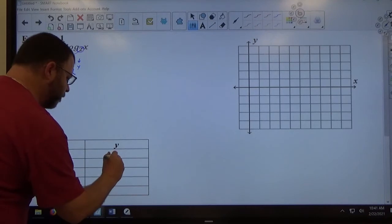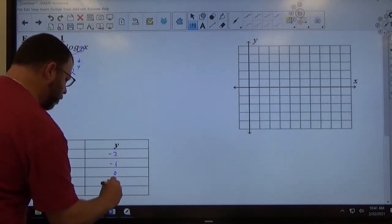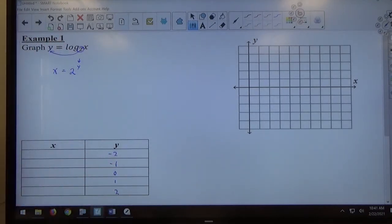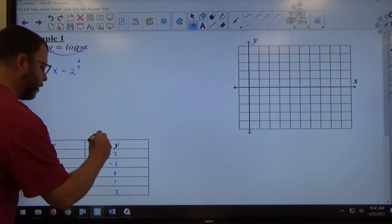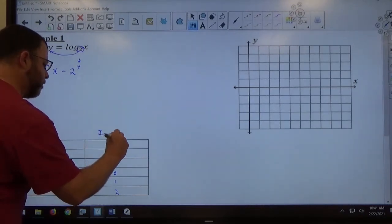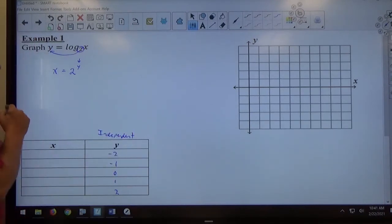So, I'm going to pick y equals negative 2, negative 1, 0, 1, and 2. Making y independent in this case. And then I'm using the equation here to solve for y.